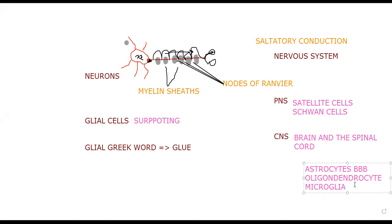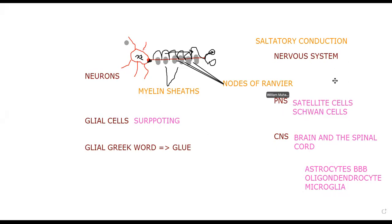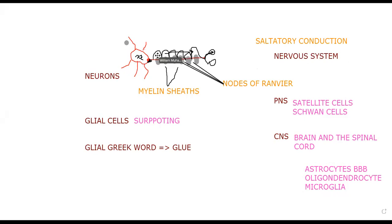This was an introduction explaining the glial cells and how the electrical impulse is transmitted along the axon — jumping via saltatory conduction through the nodes of Ranvier.